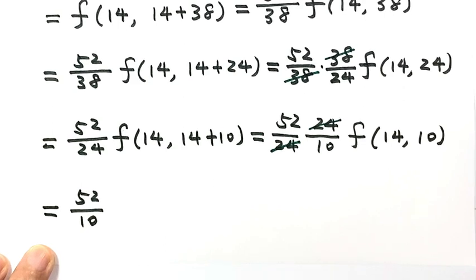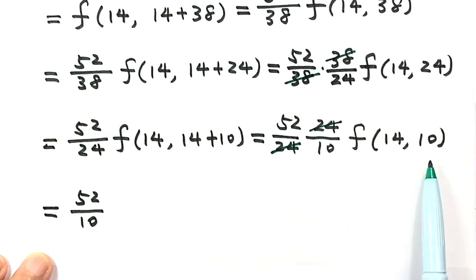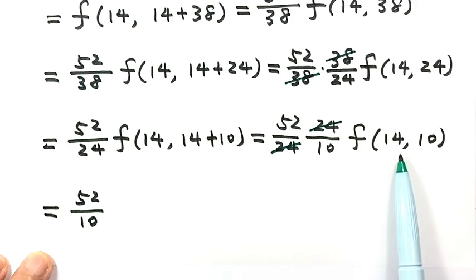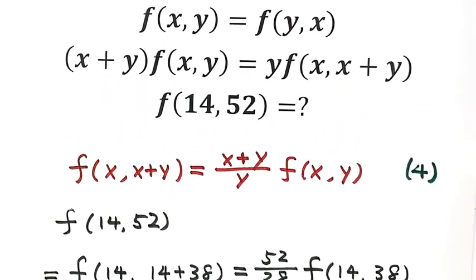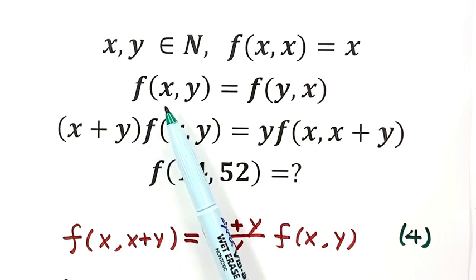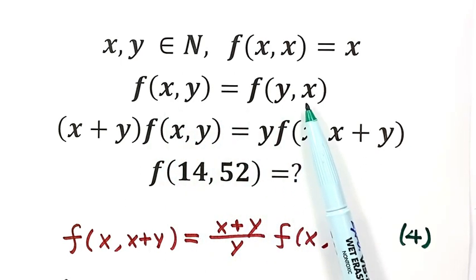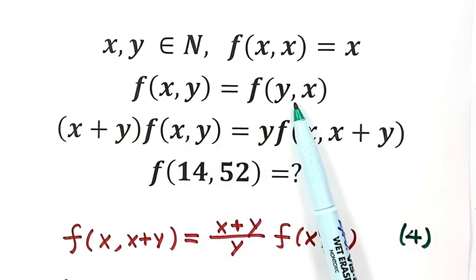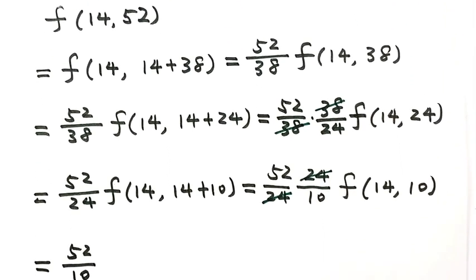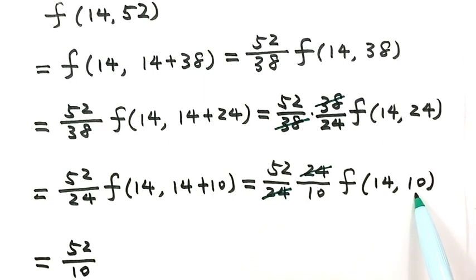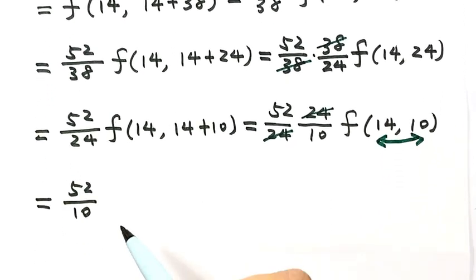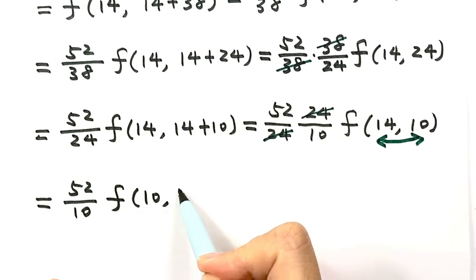So now we think about the other identities we haven't used yet — the second identity. The second identity says f(x, y) equals f(y, x), meaning when we swap x and y, the result is the same. We apply Identity 2 here to swap the arguments, giving us f(10, 14).